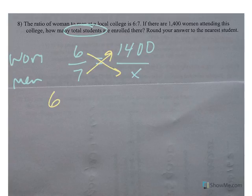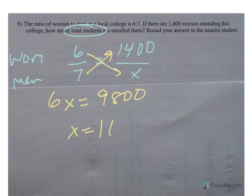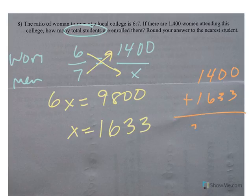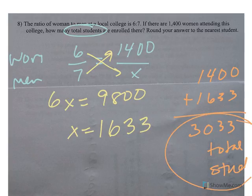I'm going to cross multiply and I say 6x equals 9,800. Divide both sides by 6, and I get approximately 1,633 men. So if I take women plus men, there are approximately 3,033 total students at this campus.